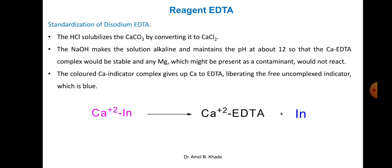When we perform the titration, initially in the conical flask we have calcium carbonate dissolved with the solvent and indicator added. When the indicator is in its free form it has a blue color, but when added to the conical flask containing calcium ions from calcium carbonate, calcium forms a complex with the indicator. This complex is pink in color, so the solution in the conical flask is initially pink before titration begins.